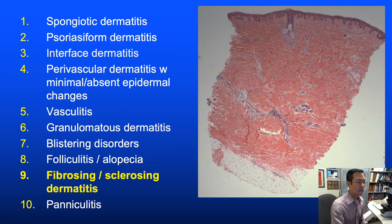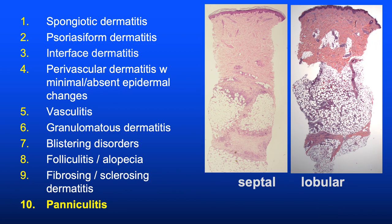Fibrosing and sclerosing disorders are characterized by increased collagen, usually in the dermis. And finally, panniculitis—the so-called ugly duckling of inflammatory dermatopathology—traditionally subdivided into predominantly septal or lobular patterns of inflammatory infiltrate.